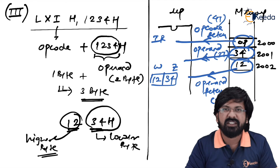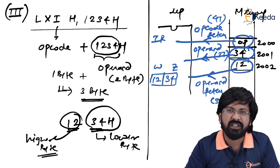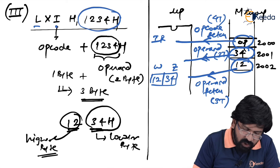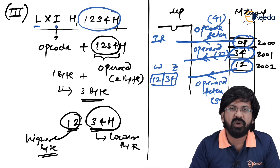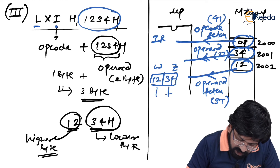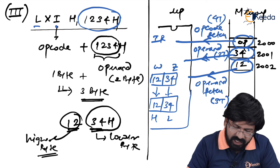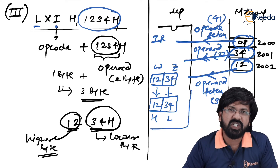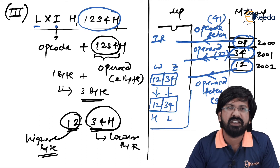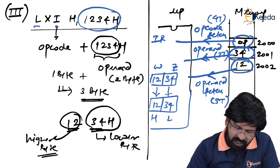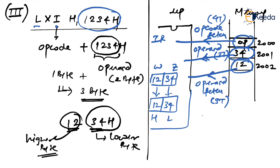Step 3 is execution. LXI H,1234H loads 1234H into HL register pair: 12H goes into H and 34H goes into L, fetched from W and Z respectively. This is purely internal — WZ data is copied into HL register pair, no external memory operation. Step 3 can be skipped. Total: opcode fetch (4) + operand fetch (3) + operand fetch (3) = 10 T-states.